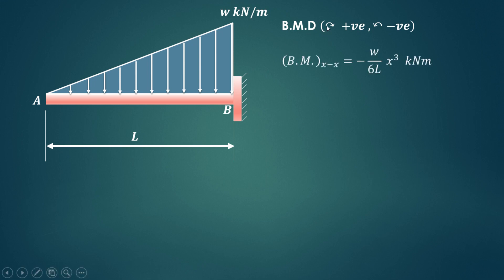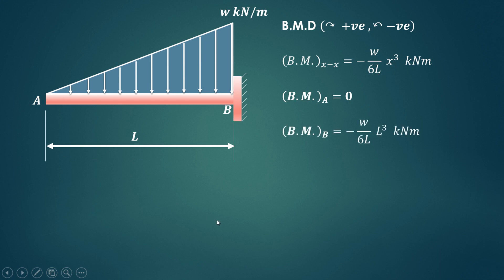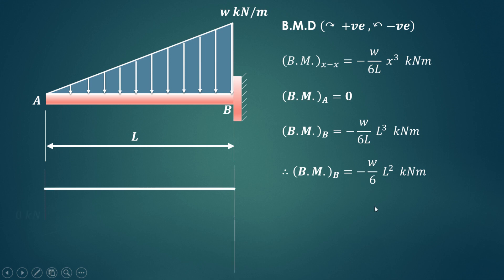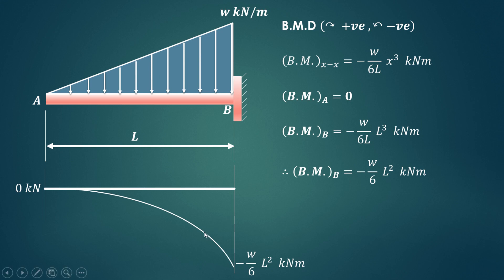The bending moment convention used is: clockwise positive, anti-clockwise negative. Bending moment at any section XX is minus W upon 6L times x cubed. At A, x equals 0 so bending moment is 0. At B, x equals L, so substituting: L cubed and L cancel, giving bending moment at B equals minus WL squared upon 6 kilonewton-meter. This is a cubic (third-degree) equation. In this way we can draw the shear force and bending moment diagrams for a cantilever beam carrying uniformly varying load.